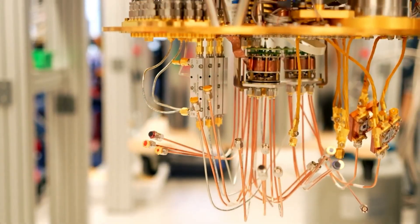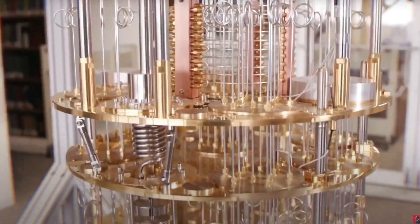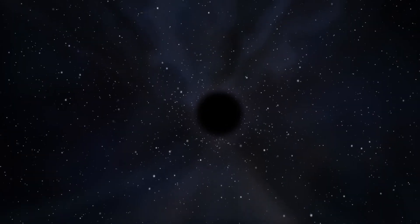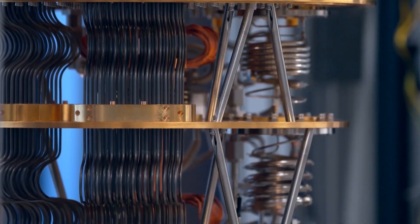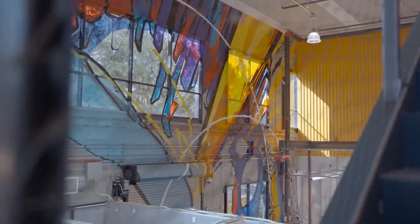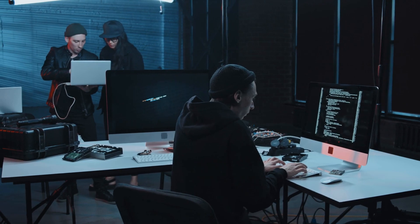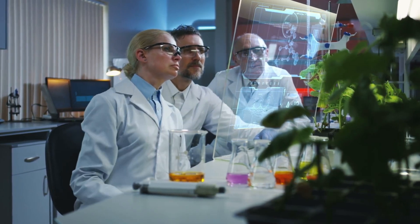But here's the thing, quantum computing isn't perfect yet. Building these machines is super tough. Qubits are picky. They need to be kept super cold, like colder than the darkest corner of space. Even a tiny shake or a warm breeze can mess them up, and when that happens, the whole computer can make mistakes. It's like trying to balance a tower of blocks during a windy storm. Scientists are figuring out how to fix these errors, and they're getting better every day, but it's a big challenge.